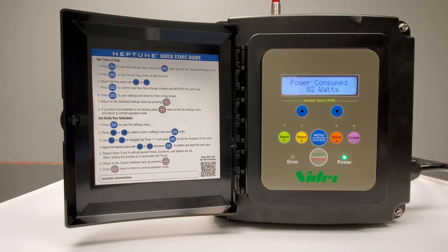After setting the time, the Neptune variable speed motor will continue to run on this pre-programmed schedule. To learn how to set a custom schedule to get the most energy efficient savings out of the Neptune motor, please refer to our advanced programming video.